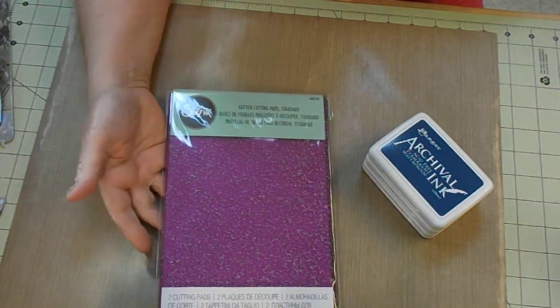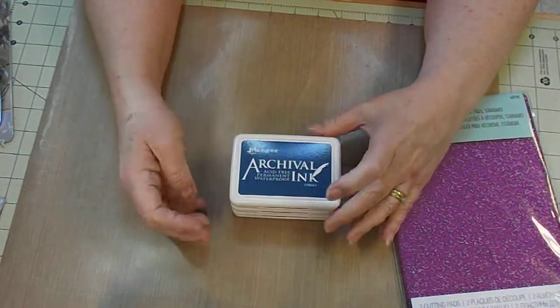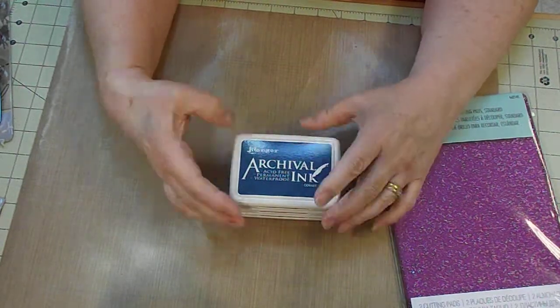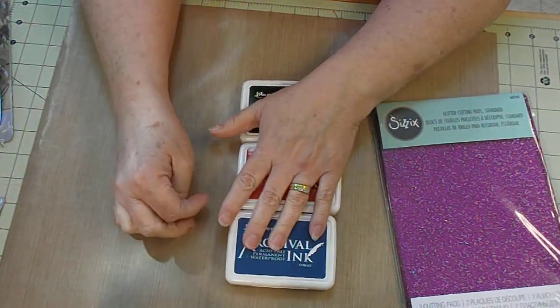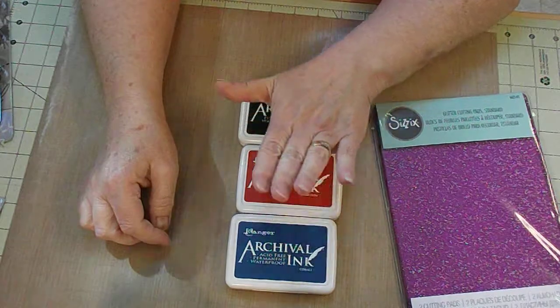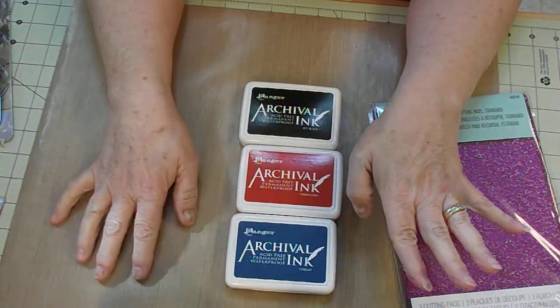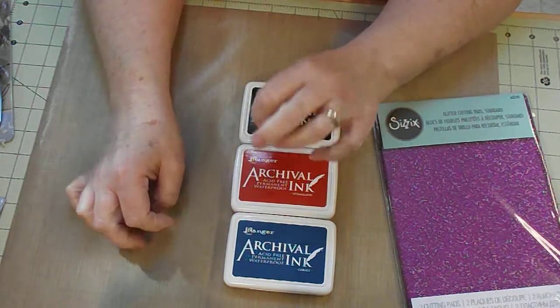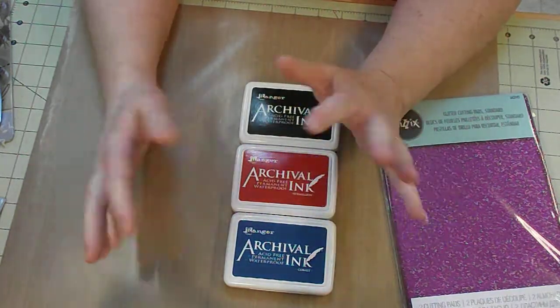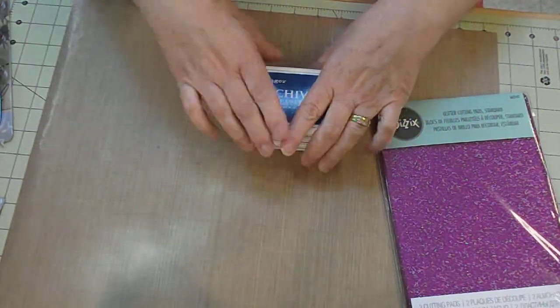And at the same time, I went ahead and got some different ink pads, archival ink, the cobalt, the vermilion, and just the jet black. The reason I got these is because with my new stamp platform, I can get a more or less solid stamped impression. Distress inks aren't really made to make solid impressions—they're supposed to look like it's kind of hit and miss. So I needed some that were actually going to be a little more on the hit side rather than the miss.